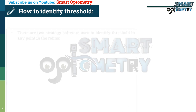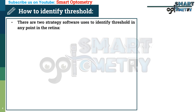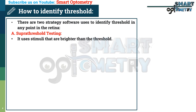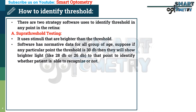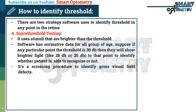Now, how to identify threshold. There are two strategies the software uses to identify threshold at any point in the retina. Strategy A is suprathreshold testing. It uses stimuli that are brighter than the threshold. The software has normative data for all age groups. For example, if at any particular point the threshold is 30 decibels, then they will show brighter light like 28 or 26 decibels to identify whether the patient is able to recognize it or not. It is a screening procedure to identify gross visual field defects.